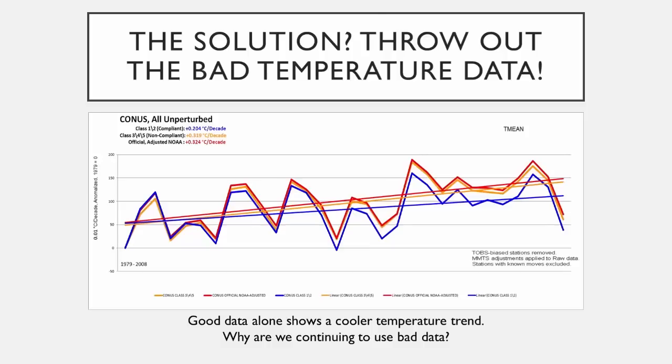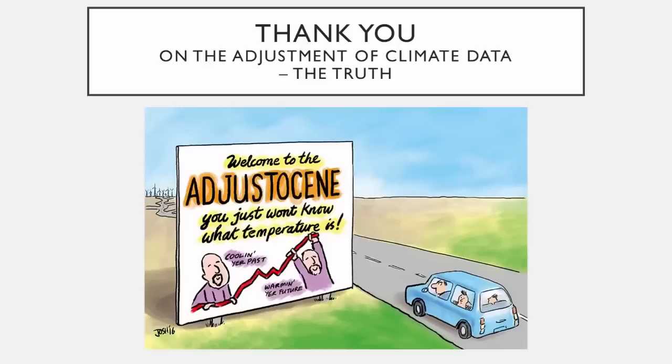Why are we continuing to use bad data? Imagine if this was stock market data and someone went and adjusted it and said, here's our new trend for our company — we've adjusted the data to make it look a little better. Do you think that would fly with the SEC? I don't think so. But in climate science, that kind of adjustment does. We basically end up with something we like to call the adjustacy — you're cooling the past and warming the future, and you don't know what you've got in between.